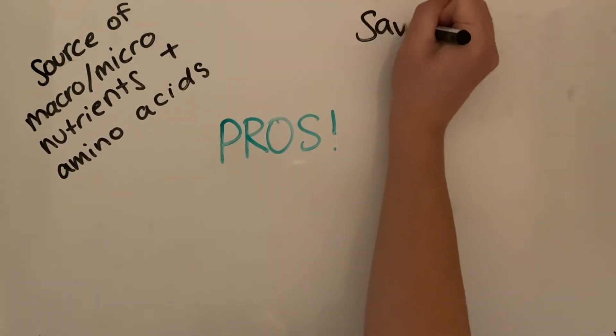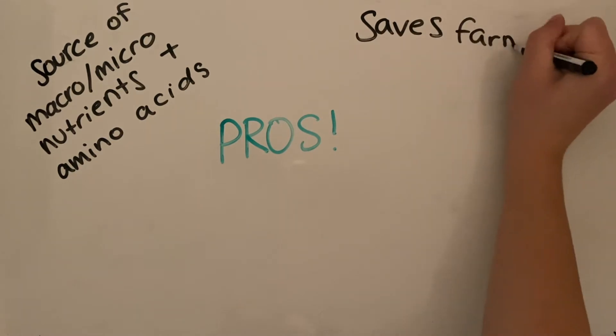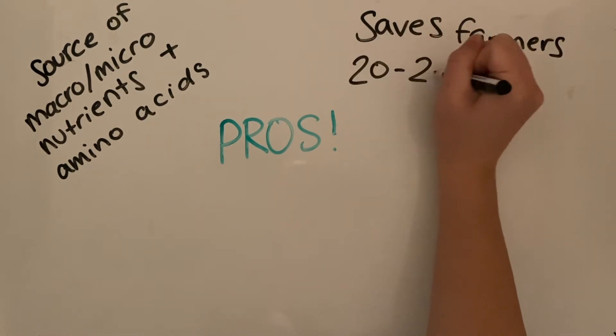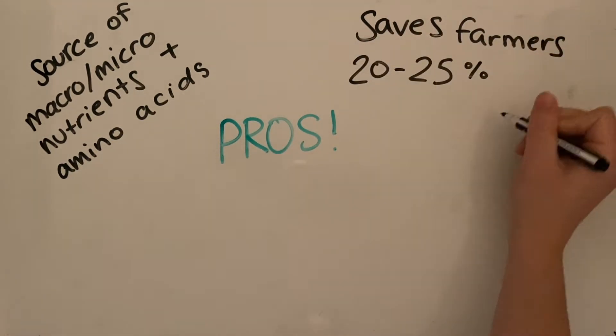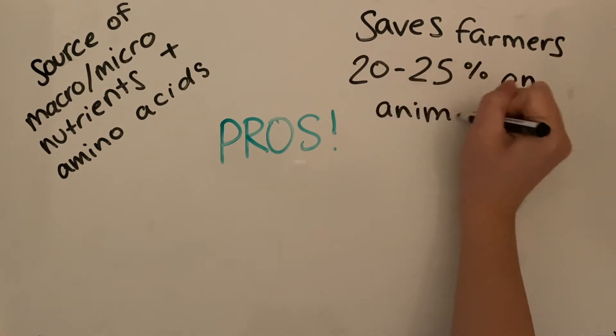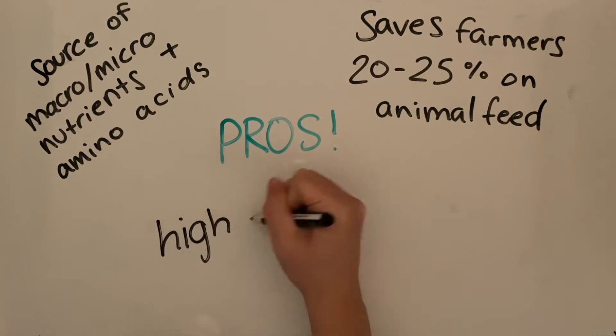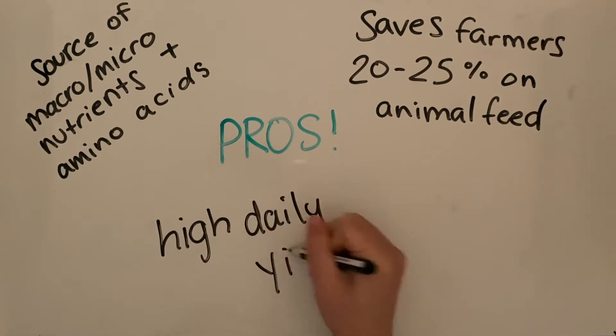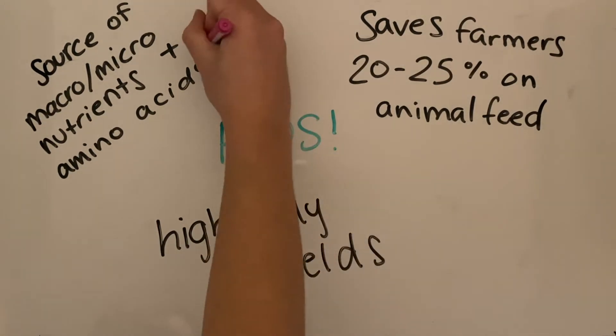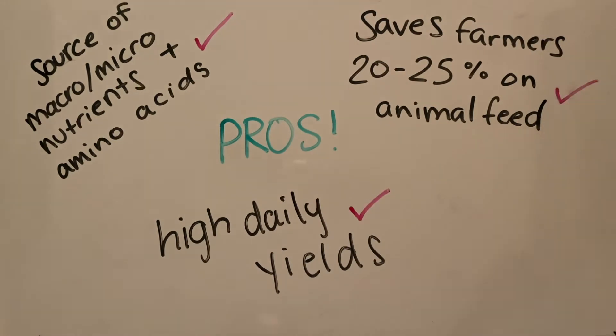Additionally, growing Azola will also save the average farmer around 20 to 25 percent compared to commercial animal feed. Lastly, once Azola plots are installed, high yields can be harvested daily, meaning that animals can be kept well-fed with minimal effort.